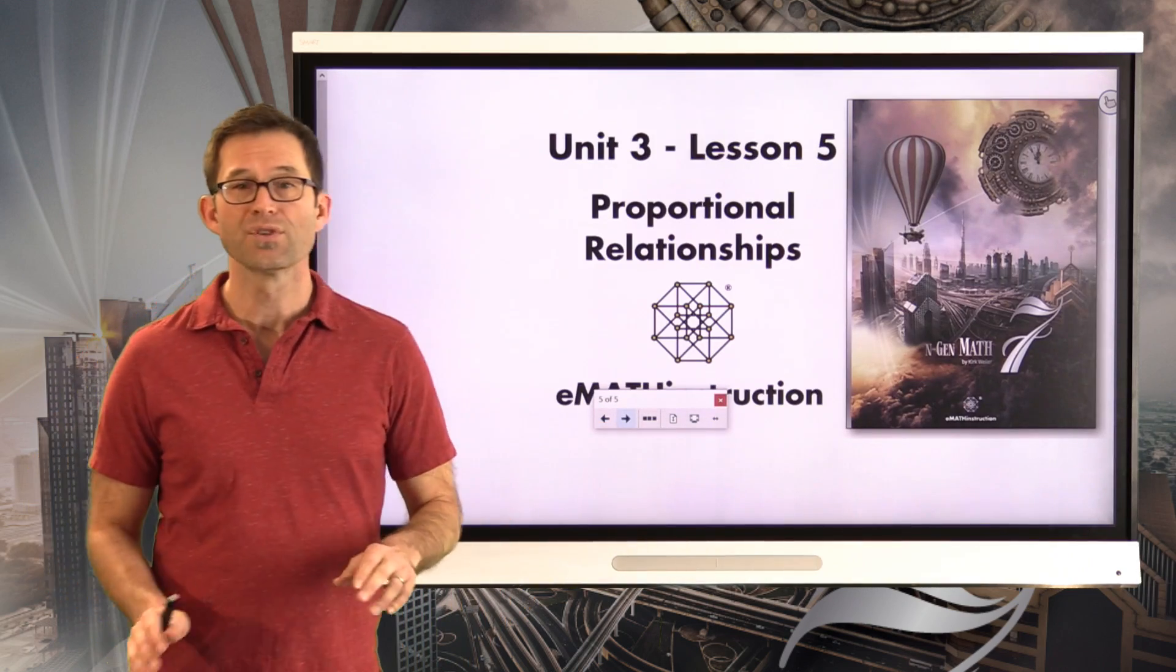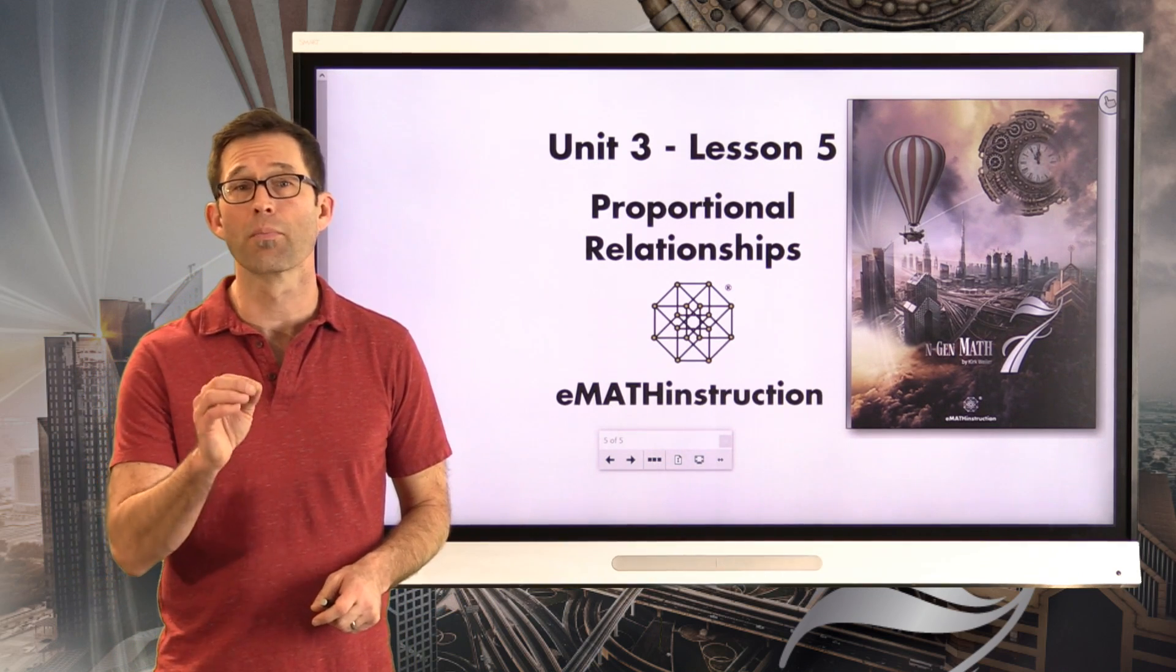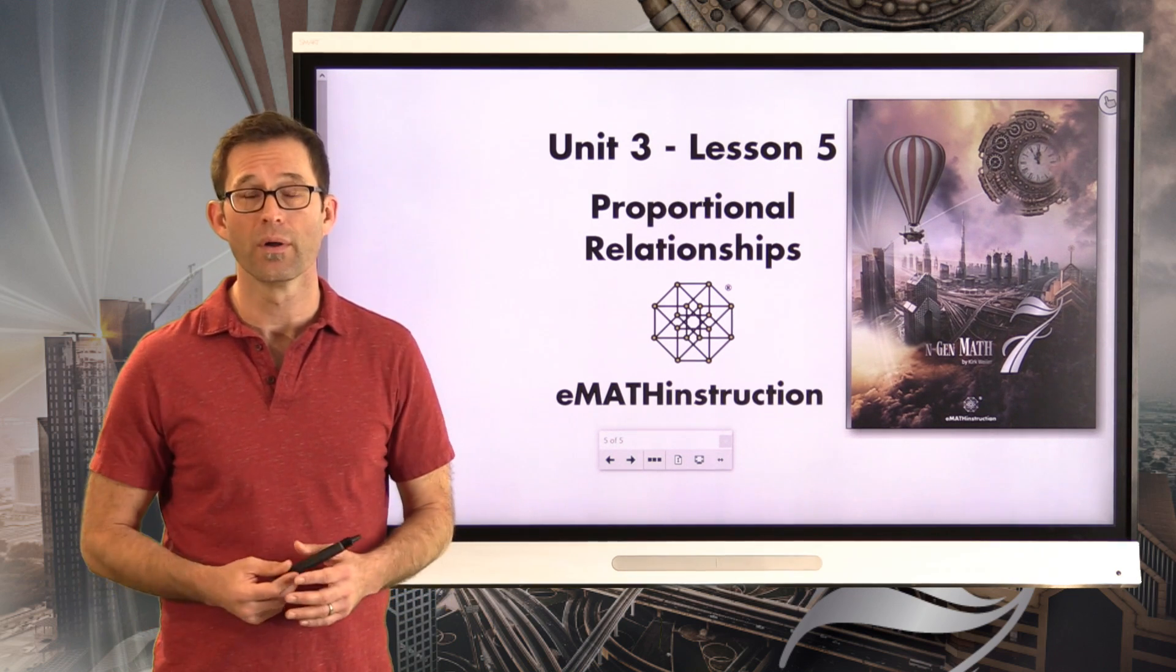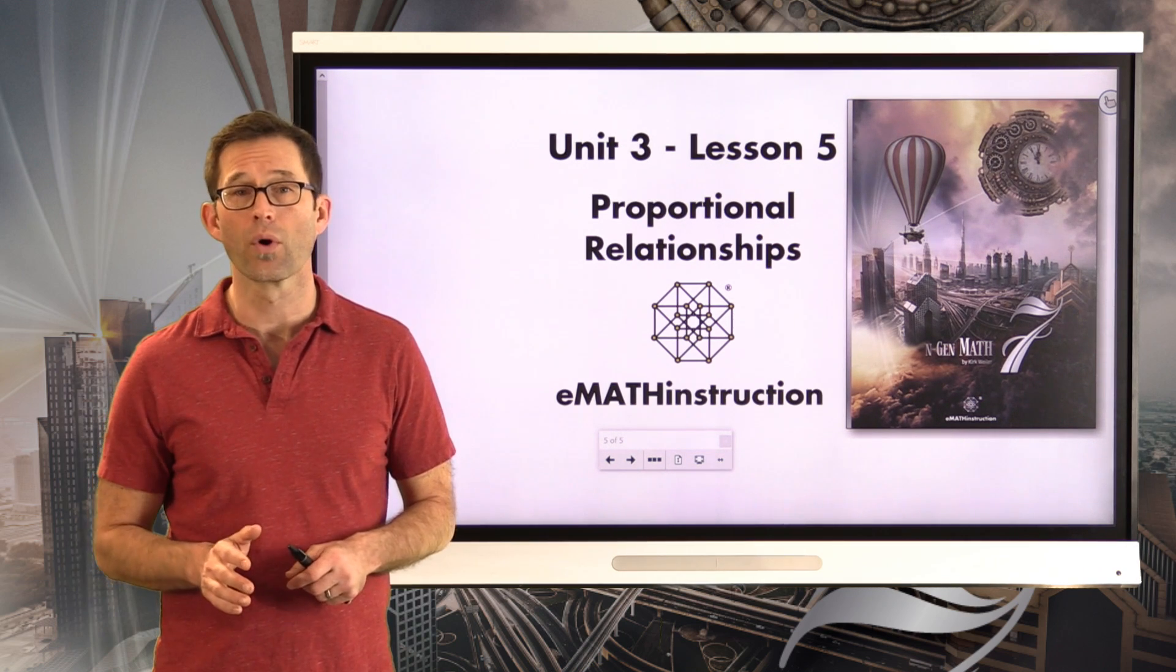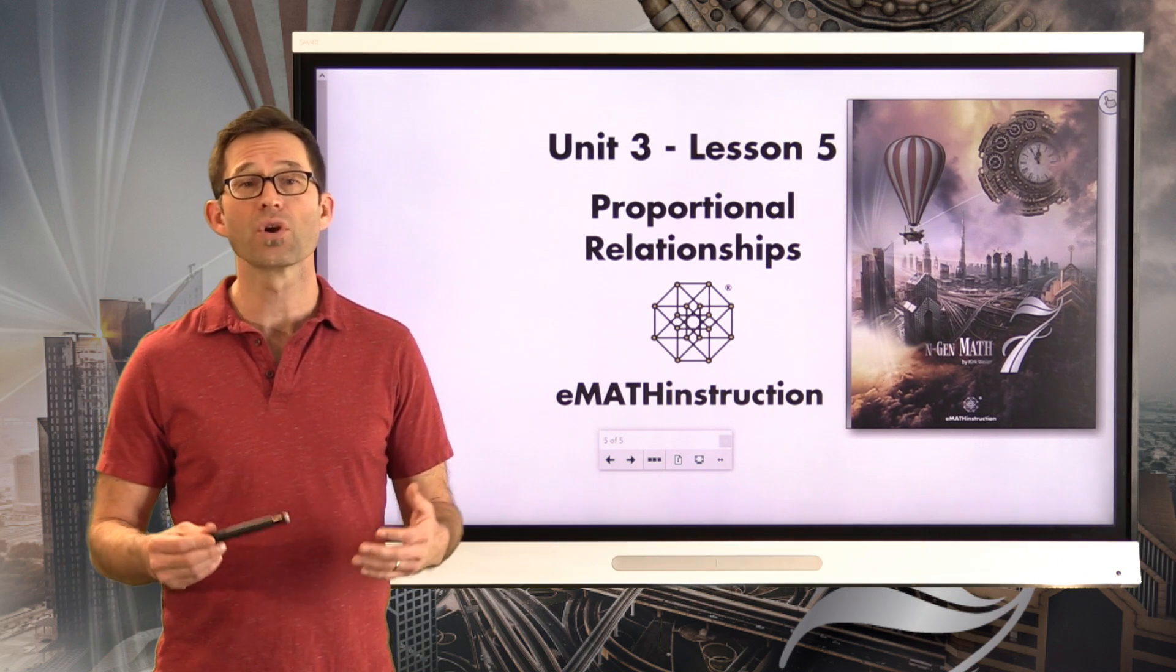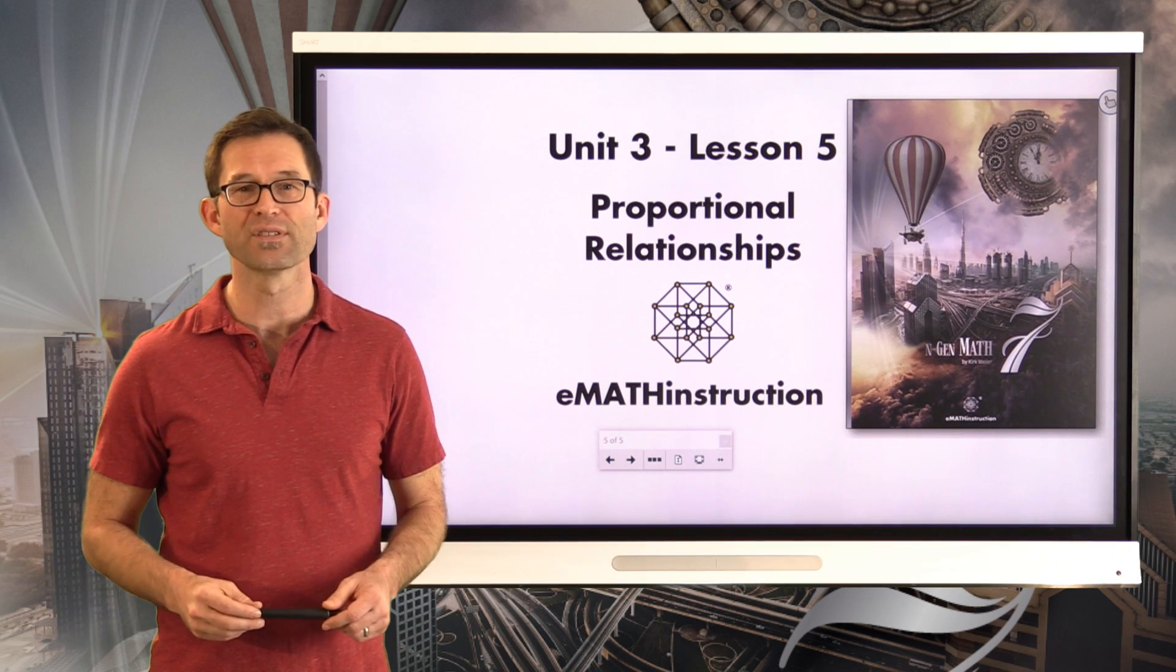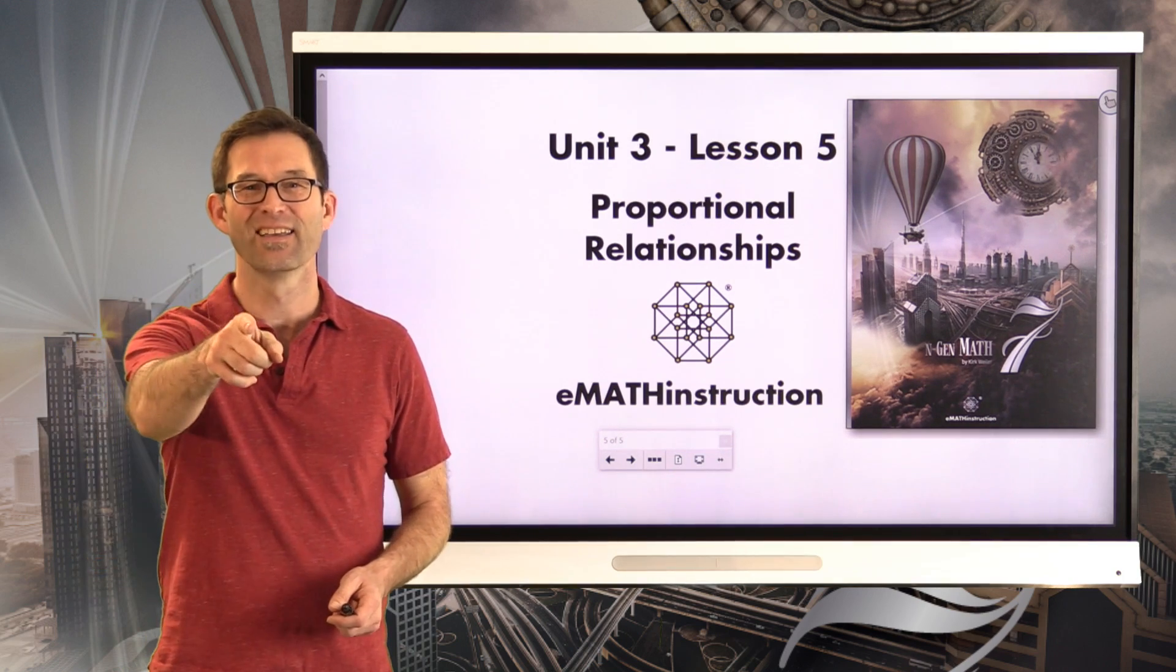Let's wrap it up. So today, what we learned about was a special type of relationship between two variables. The idea that two variables could be proportional to one another, meaning that their ratio, or when one is divided by the other, that division always turns out to be the same number. That number is what we call the constant of proportionality and very oftentimes has meaning in the real world. Maybe it's the speed of the object. Maybe it's the per cost price of something that we're buying. But we should always be able to tell what it represents by looking at the units. I'd like to thank you for joining me for another NGen Math 7 lesson by eMath Instruction. My name is Kirk Weiler and until next time, keep thinking and keep solving problems.